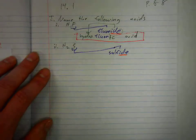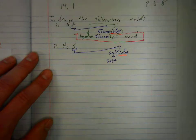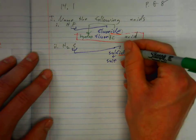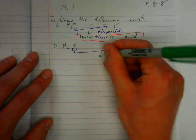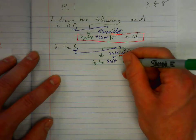The stem is still sulf. The prefix hydro goes in front. IC goes at the end, followed by the word acid.